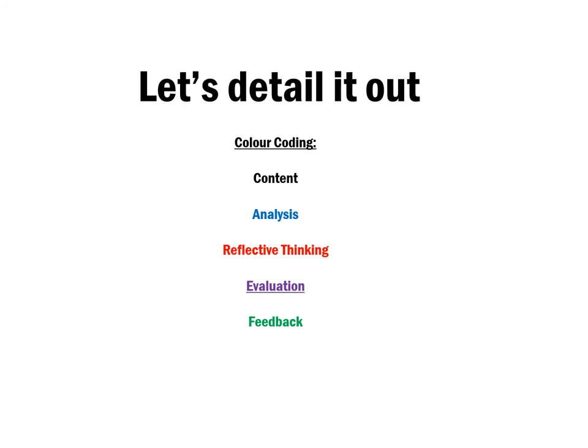Let's detail out the Gibbs Reflective Cycle for Student A and Student B that you have read just now. I have made a color coding for the subsequent slides that shows the content, the analysis, the reflective thinking, the evaluation, and also the feedback. This will make it easier for you to identify and compare with what you have done.